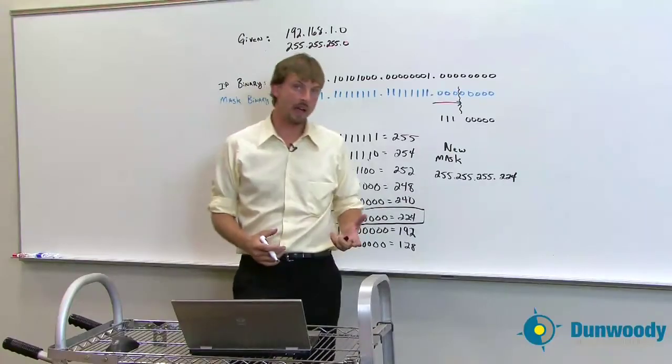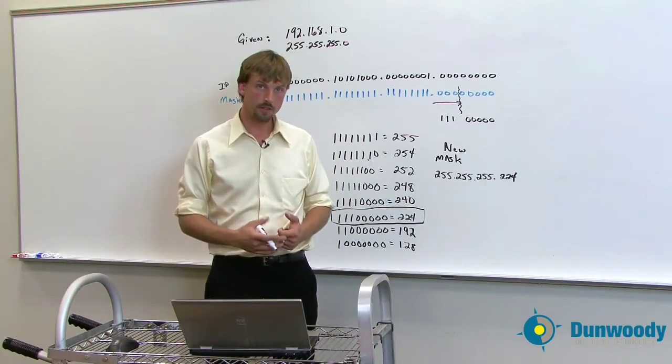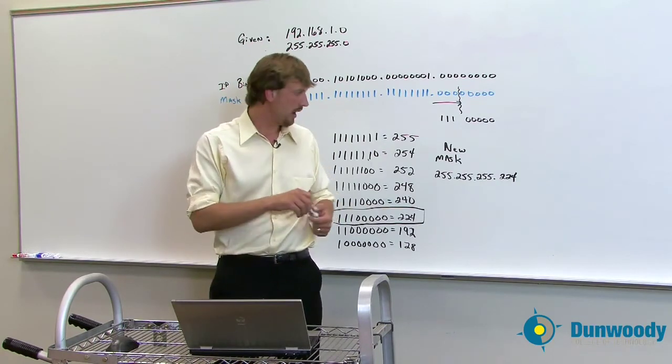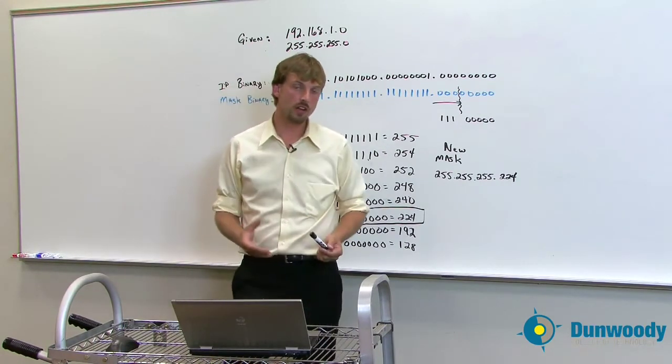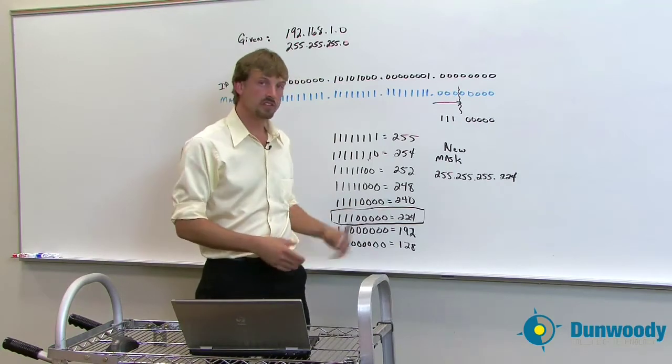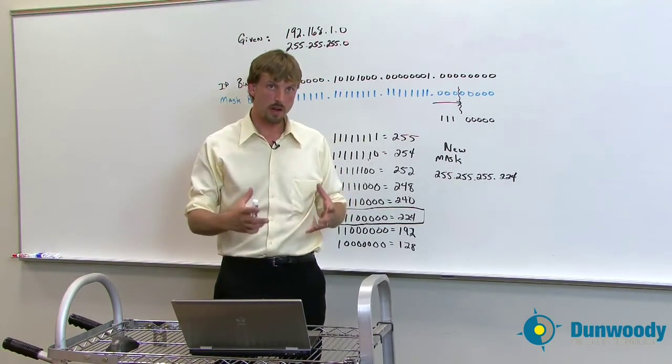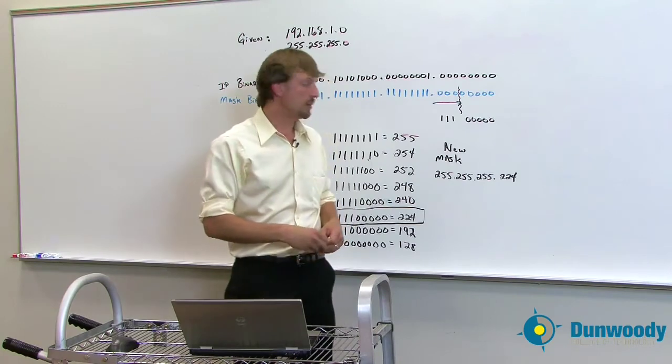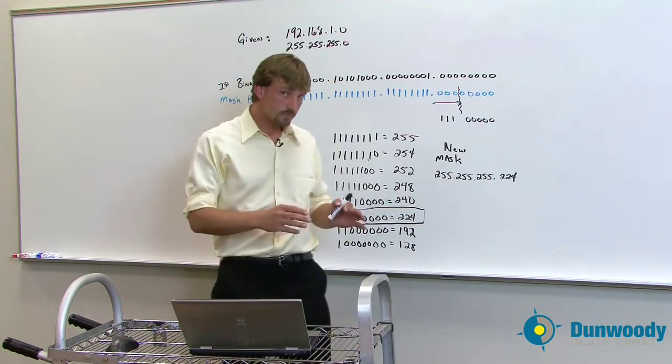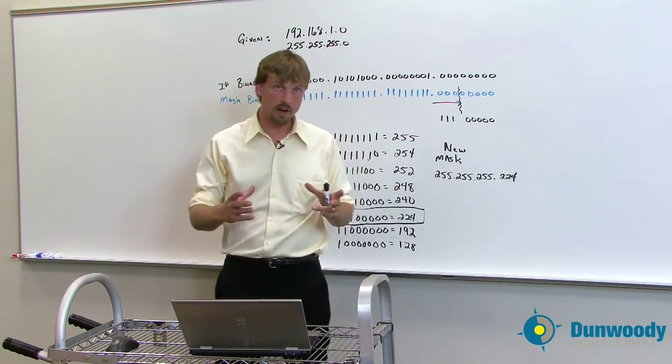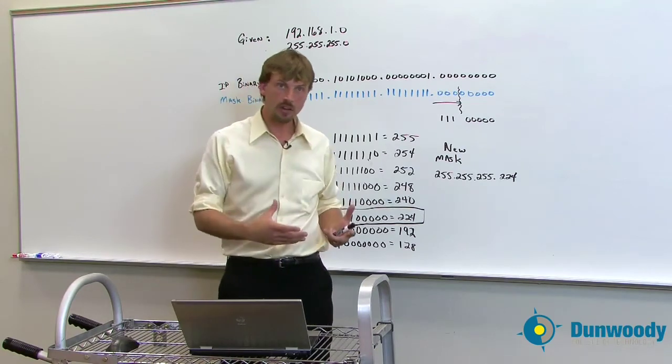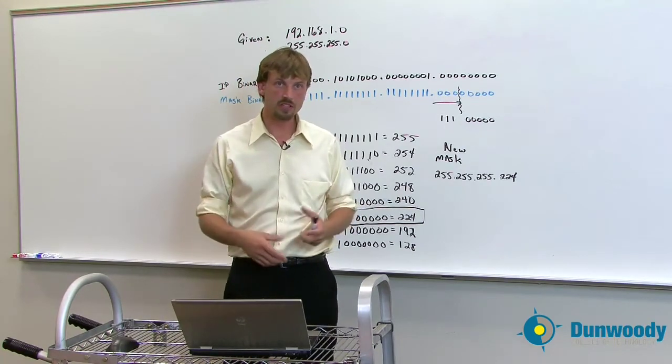Now once we know that, we can start to figure out where all of the different networks are going to be. There's a couple of shortcuts to do this, but I'm going to show you how to do this at the binary level so that there's a binary understanding to it. And it's really not that difficult. It's just converting binary back to decimal and counting in binary. It's really as simple as that. You've got to count it out in binary and then convert it back using all eight bits in that octet so that we get the appropriate decimal number.